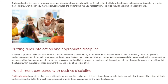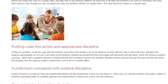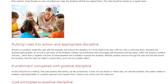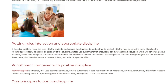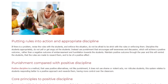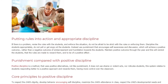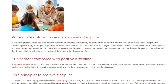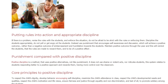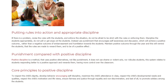Punishment Compared With Positive Discipline: Positive discipline is a method that uses positive alternatives. Unlike punishment, it does not use shame or violent acts, nor does it ridicule students. This system relates to students responding better to a positive approach, rewards them, and gives teachers more control over the classroom.